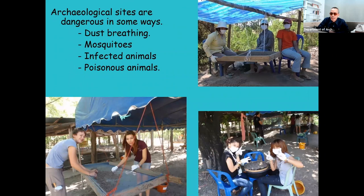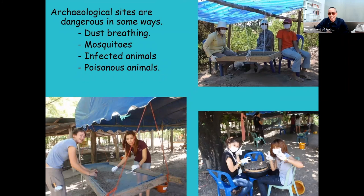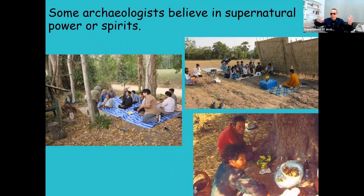Working in different environments, you can face dangerous animals and difficult conditions. In dry areas with a lot of dust, you may want to wear a mask during screening. In hot and humid areas like in Southeast Asia — tropical areas with a lot of mosquitoes — think about this. Some insects or poisonous animals like snakes and scorpions — I found a lot of snakes near my site. Also, working in contemporary society, there are people who still believe in supernatural powers as part of their local cultural traditions. It doesn't hurt to comply with their local traditions.